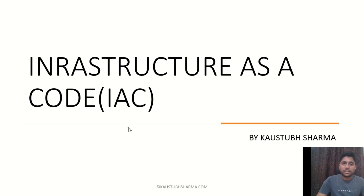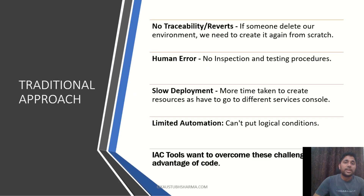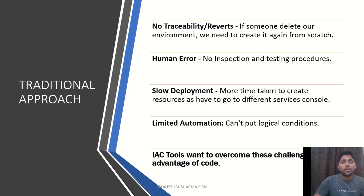Before we understand why we need Infrastructure as Code, we need to understand the traditional approach to IT infrastructure. Earlier, in the legacy era, MNC organizations had big data centers where they used physical machines and physical databases to store their data. But with the advancement of cloud technologies, organizations no longer need to buy physical components — they can use cloud providers which offer these components on a pay-per-use basis. Even after moving to cloud computing, there was still a clear need that led to the popularity of IaC tools.